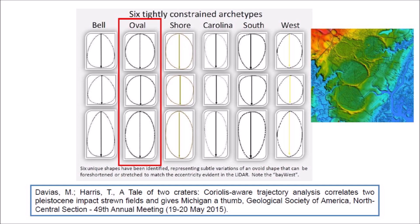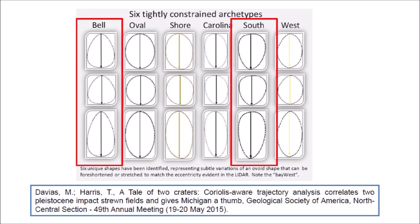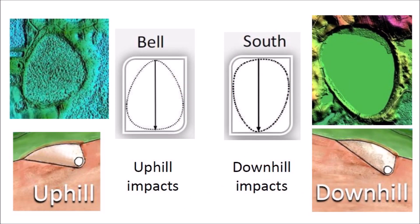The Oval archetype applies to Carolina Bays that are circular, like the ones found on the Delmarva Peninsula. These Carolina Bays were formed on terrain where the layer of unconsolidated soil was not deep enough to allow the formation of inclined conical cavities. The geology of Delmarva was greatly affected by an extraterrestrial impact in the Chesapeake Bay 35 million years ago, and the tsunami produced by the impact eroded the area. The Bell and South archetypes occur on inclined terrain — the Bell archetype corresponds to uphill impacts and the South archetype to downhill impacts.